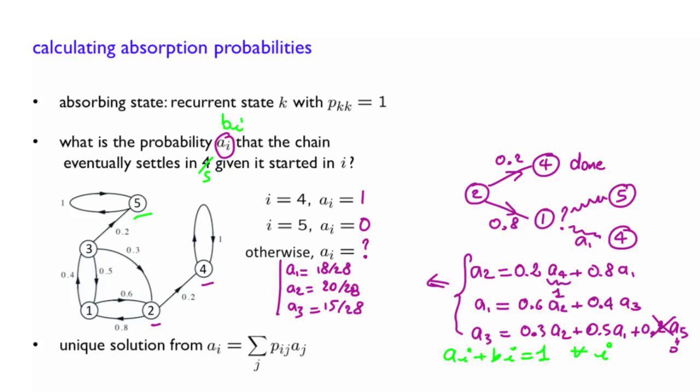To sum up, in general, the calculation of the probabilities to reach a given absorbing state s, starting from any state i of a general Markov chain with m states, will be the unique solution of a system of m equations with m unknowns with the additional conditions that a of s equals 1 and a of s prime equals 0 for the other absorbing states.